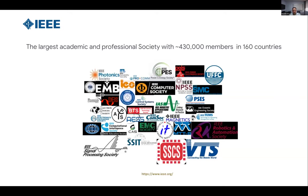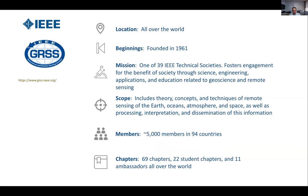I'm sure everybody here knows about IEEE. We are the largest academic and professional society with about 430,000 plus members in 160 countries. Within IEEE, there are many societies, and the society we are part of is the Geosciences and Remote Sensing Society. We have about 5,000 members over 94 different countries, and it's completely volunteer-based.